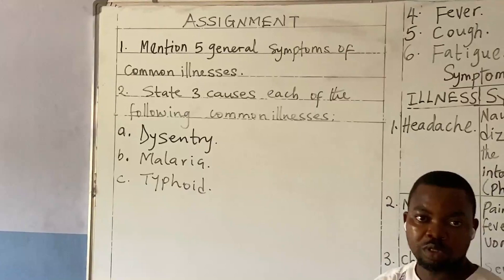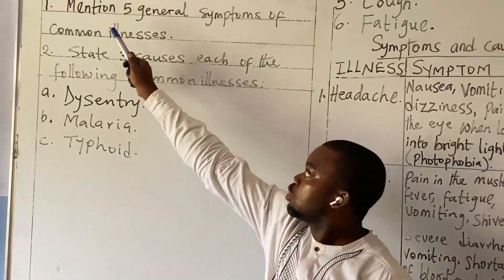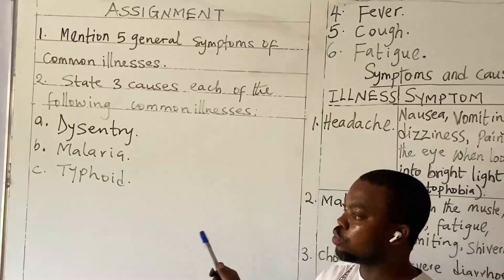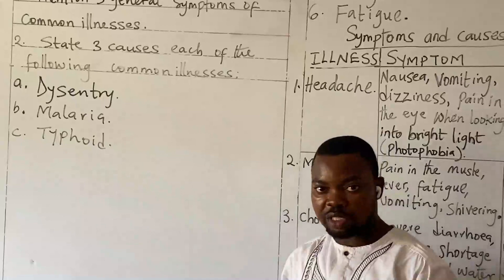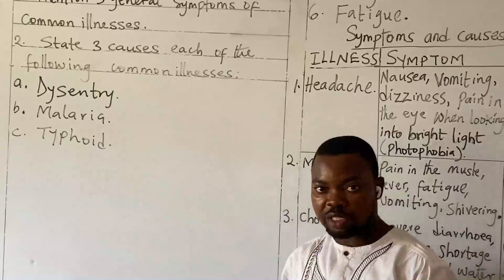That's what I meant. And while doing it, you must write clearly and indicate the number. If you can, make a sentence — because I discovered most of you are not making sentences. You can write 'the five general symptoms of common illnesses are...' then state them, or number them. Take note of that. Bye for now. We love you.